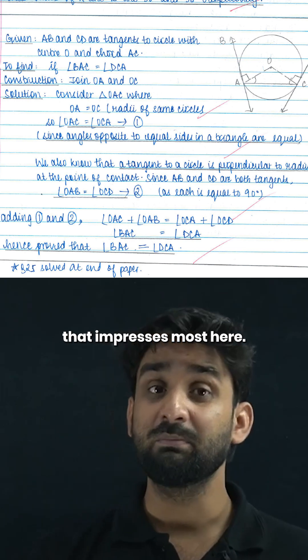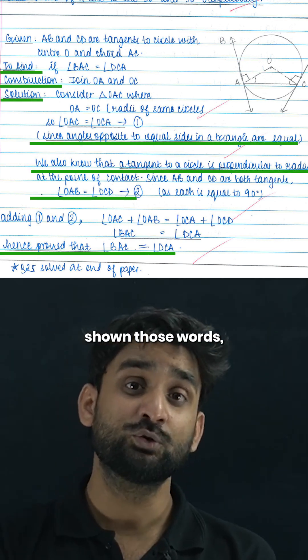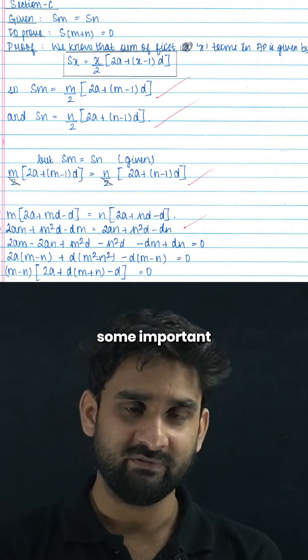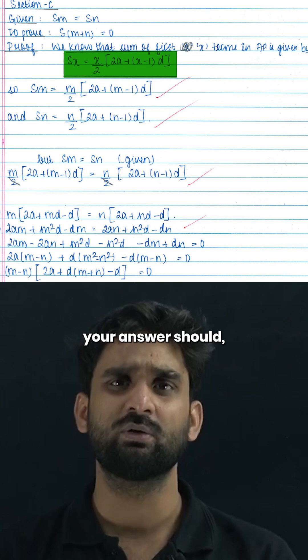One thing is very important that impresses most here, whenever some important words are appearing, the student has shown those words underlining it. And wherever some important conclusion is coming, that every conclusion is being boxed. So this is the way you can make your answer sheet effective.